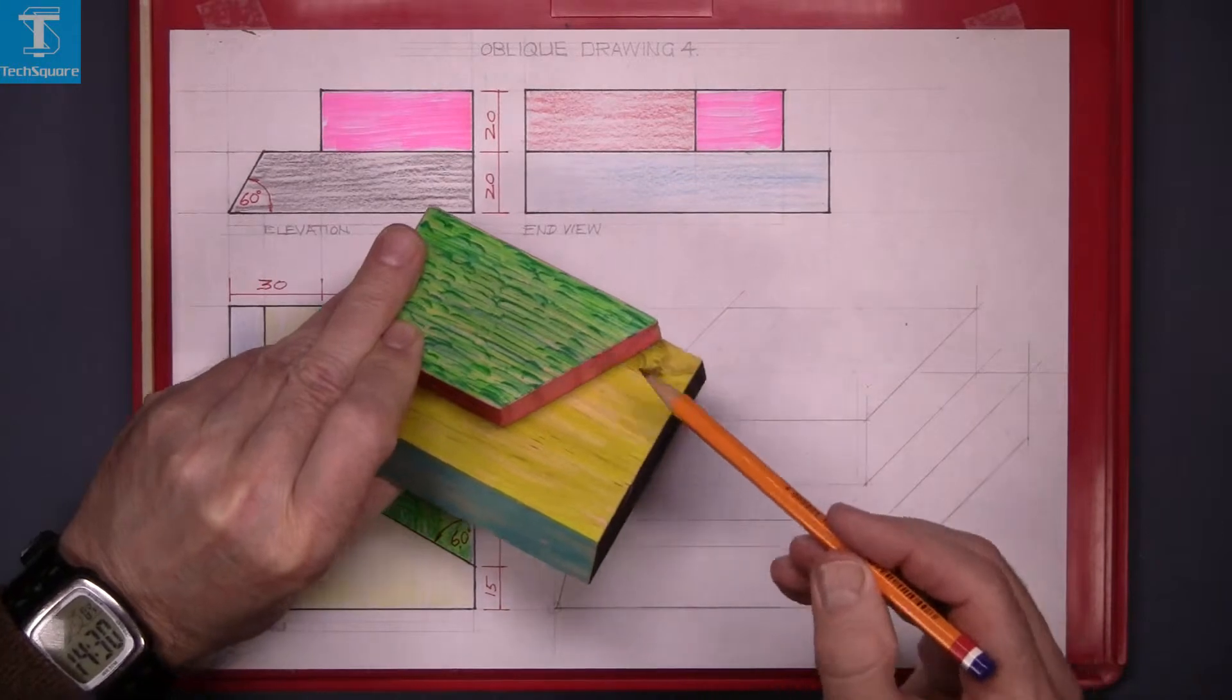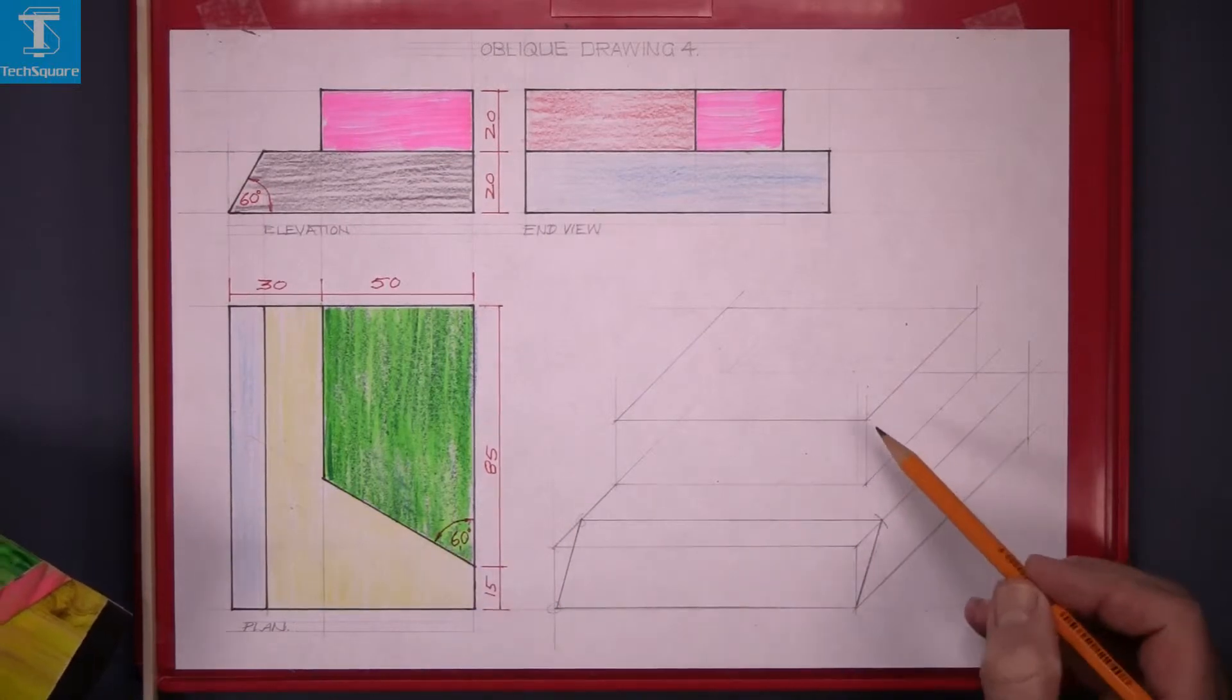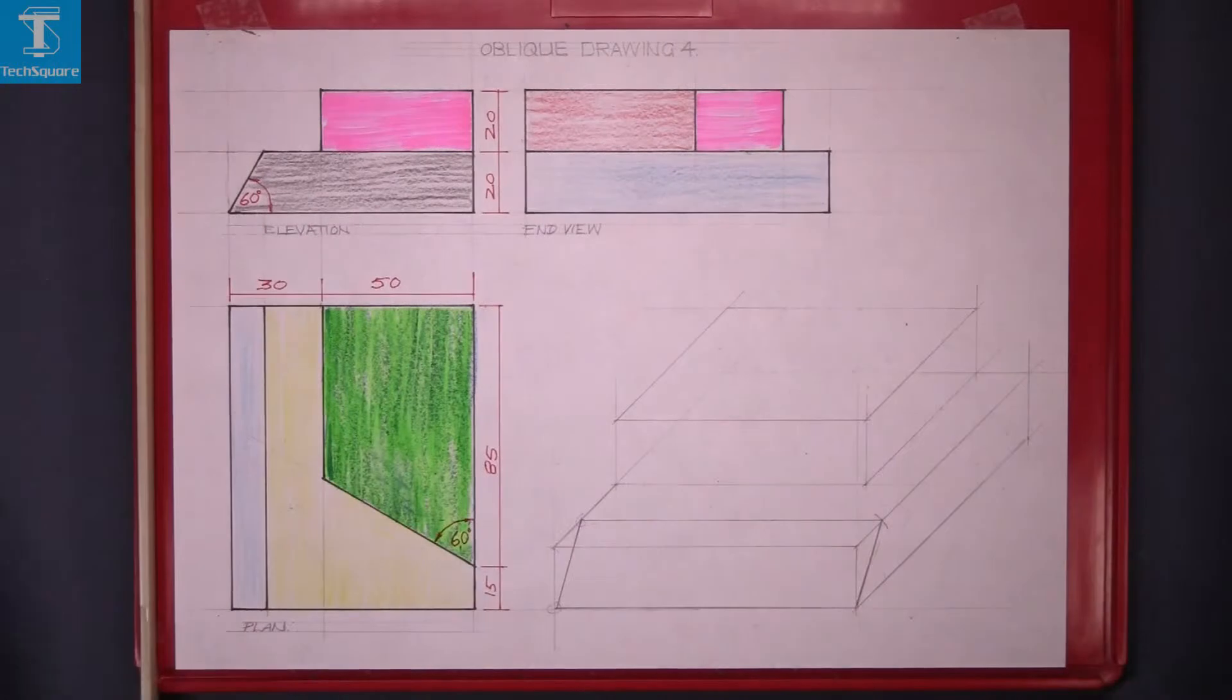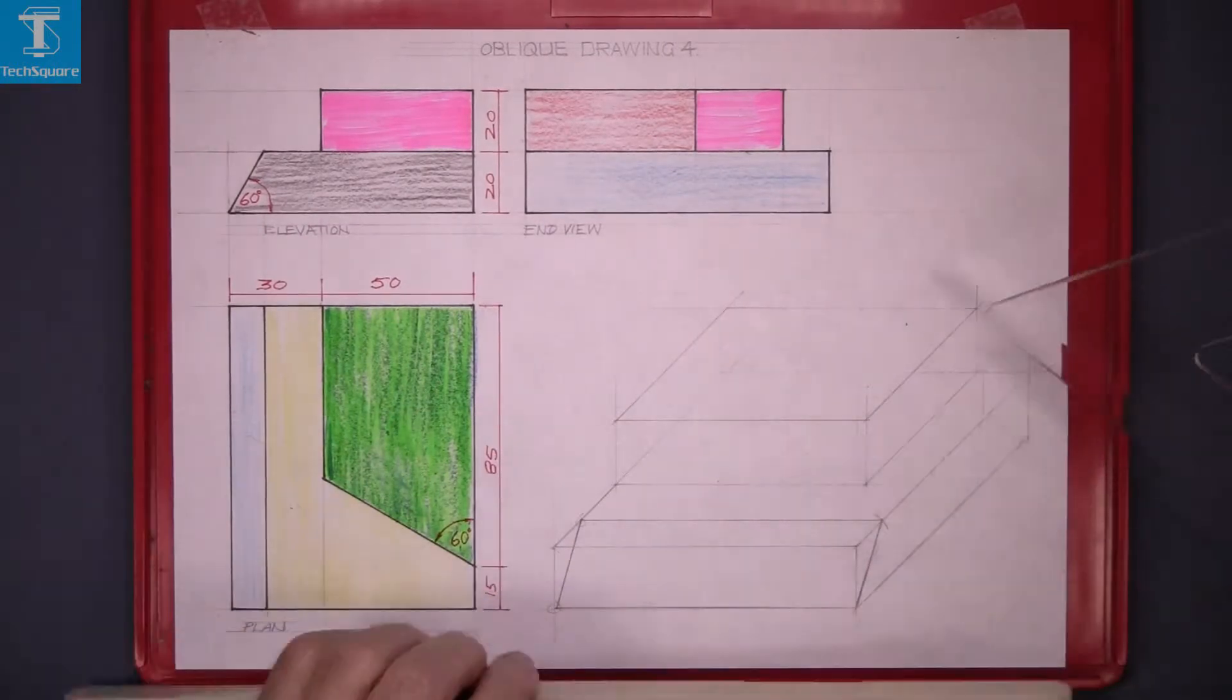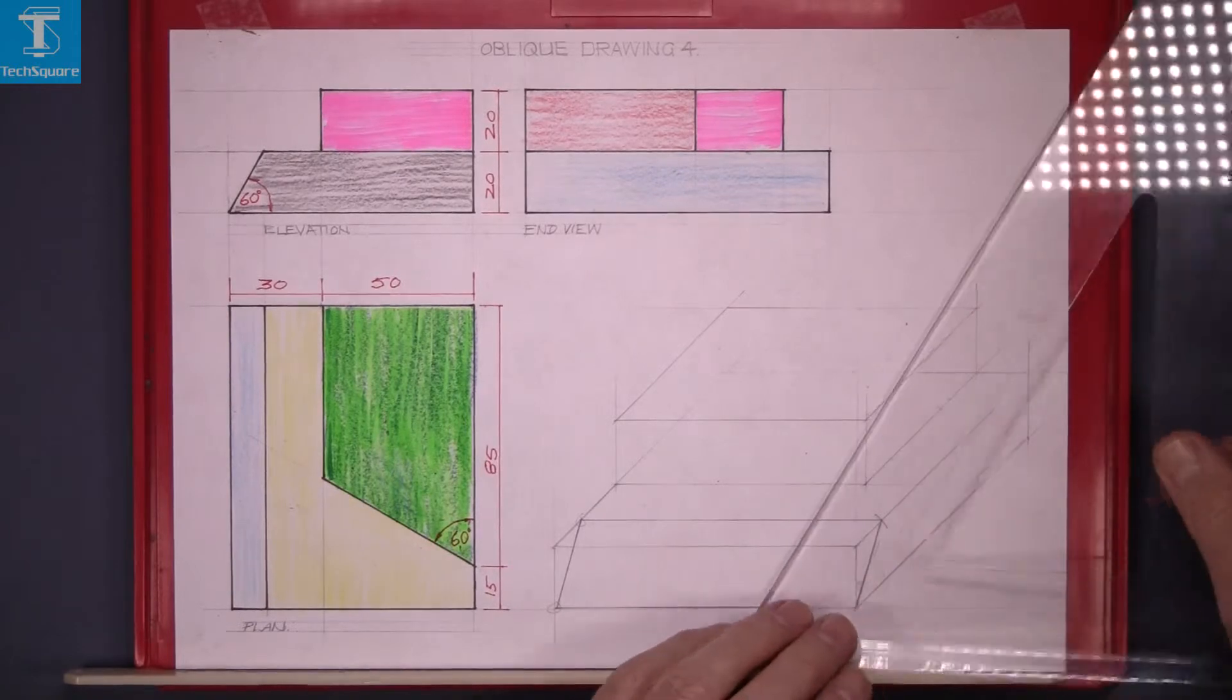Now the top piece is cut at 60 degrees, but again we cannot use the set square. The set square won't work because it's at the wrong angle.